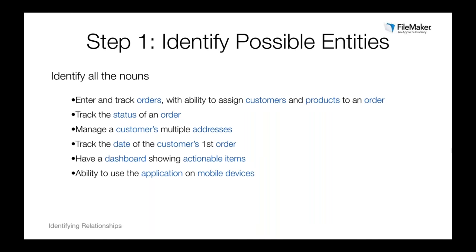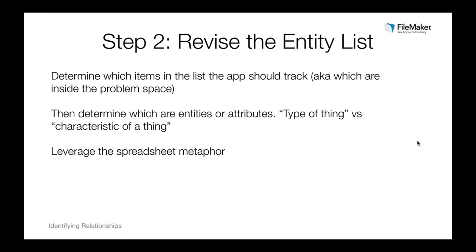We're going to go through some steps you can take to get that list. Step one is identifying possible entities. This is pretty straightforward — all you do is take your list of requirements and identify the nouns. I've highlighted all the nouns in blue. The next step is to revise that entity list: determine which items represent a distinct type of thing that the app should track. Some items don't need to be tracked, so you would remove those.